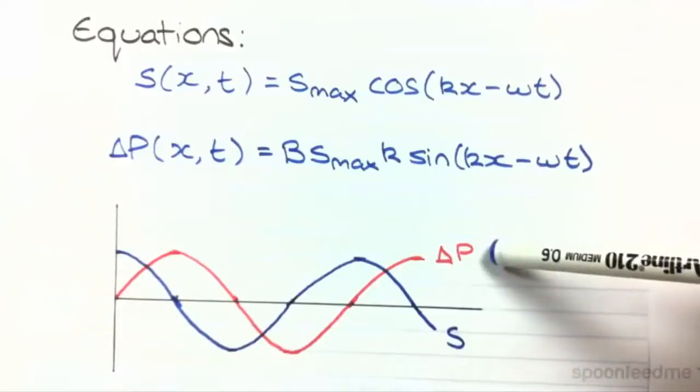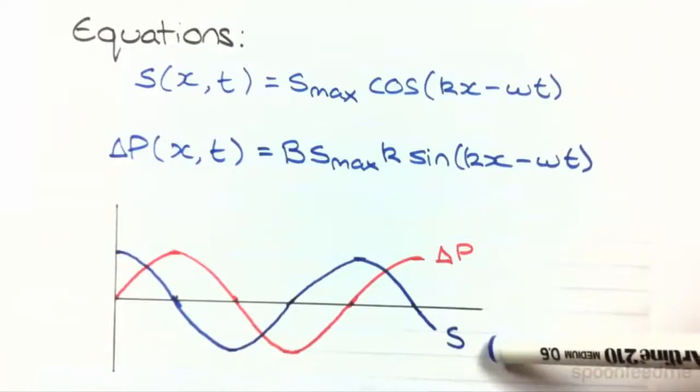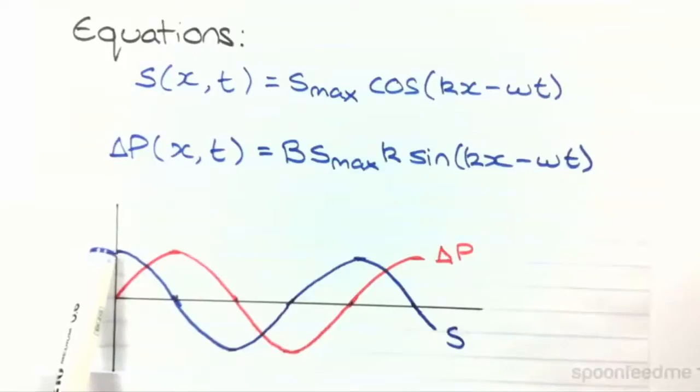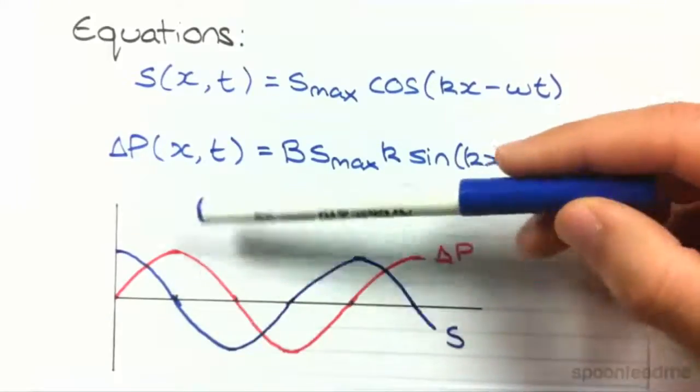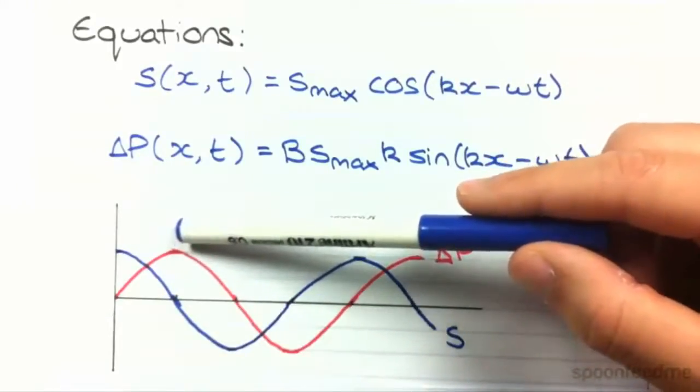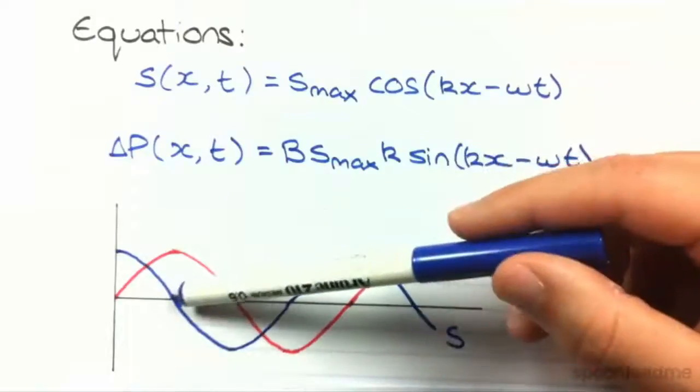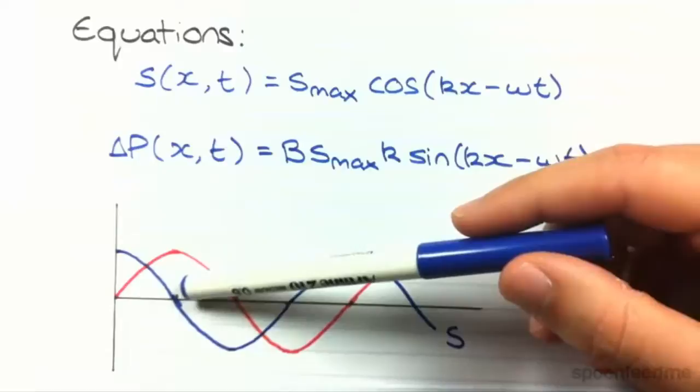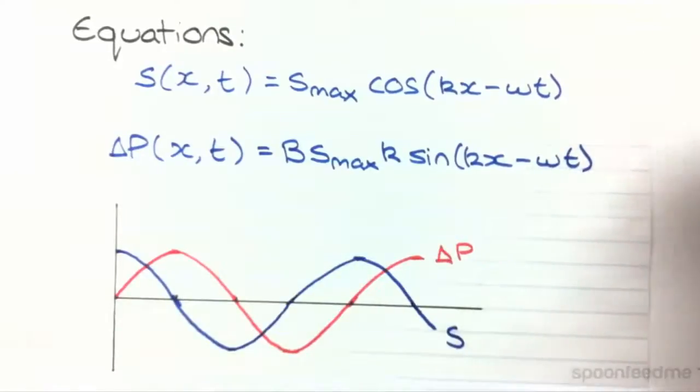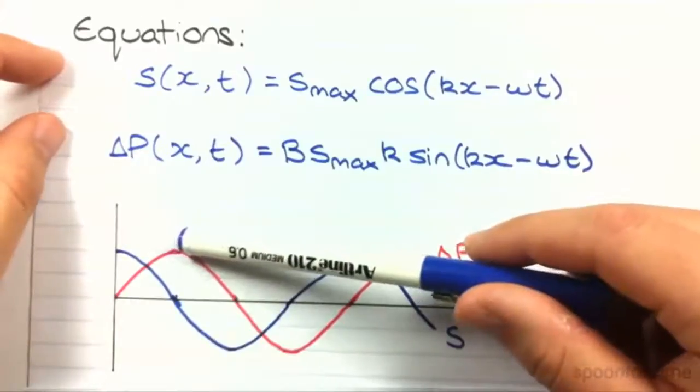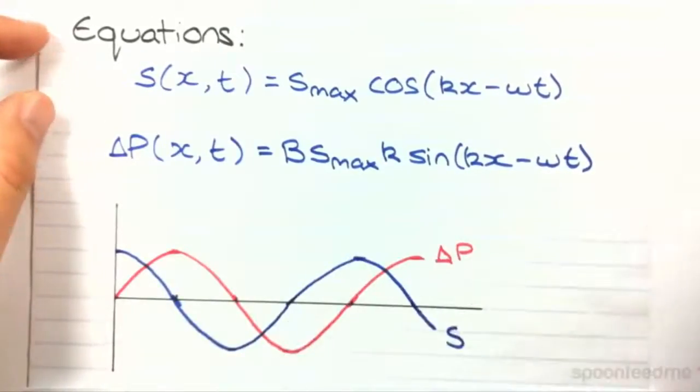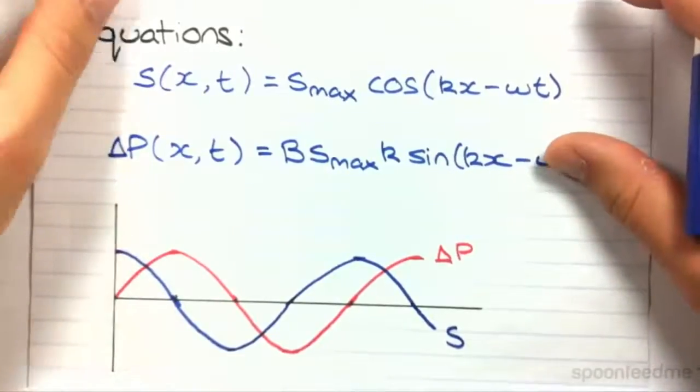...that one is a cos and one is a sine. And what that looks like as a graph is something like this, where the difference in p here in red and the displacement in blue, they essentially line up in different places. For instance, if you look at the start, where there's a maximum displacement, there's actually no change in pressure. And where there's a minimum displacement, there's no change in pressure. Where there's no displacement, there's the highest change in pressure. And that's because when there's no displacement for a particle, the particles around it will be pushed closer towards that particle, therefore leading to really high pressure. And the same sort of relationship happens over here. So, that's another sound wave concept.